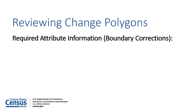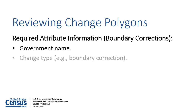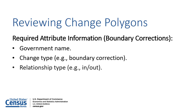Boundary corrections that are not the result of a legal boundary change only require the name of the government with updates, the change type, and the relationship type to the government — for example, whether it should be included within the boundary or removed from the boundary.